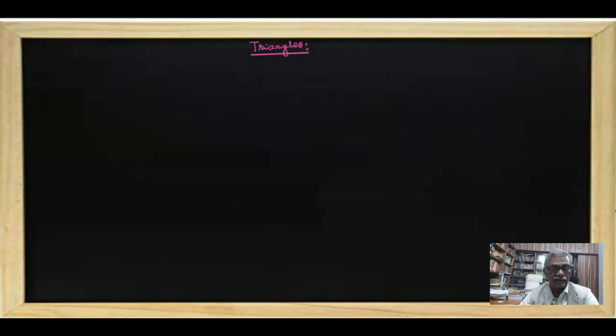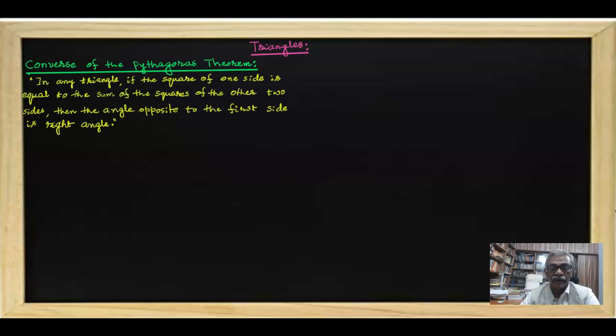The converse may be stated as: in any triangle, if the square of the longest side is equal to the sum of the squares of the other two sides, then the triangle is a right angle triangle, with the right angle at the angle opposite to the hypotenuse. In other words, if the square of one side equals the sum of the squares of the other two sides, then the angle opposite to the first side is a right angle.